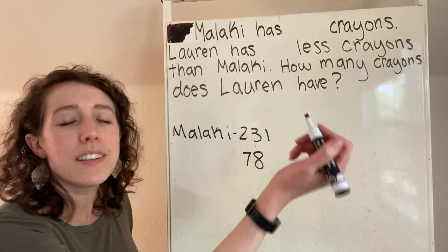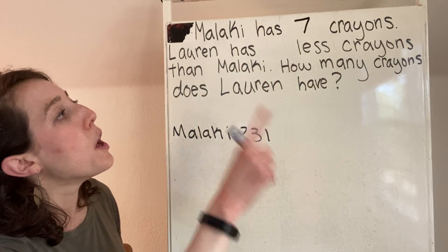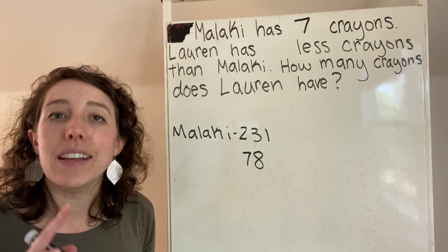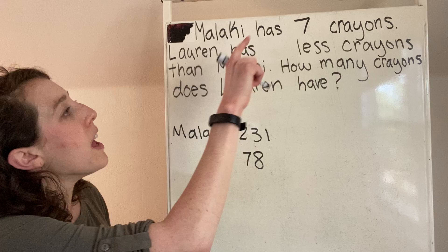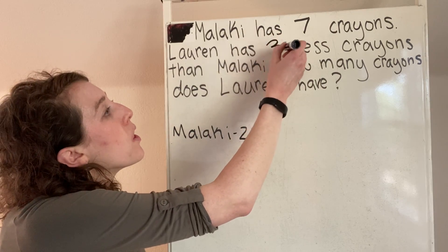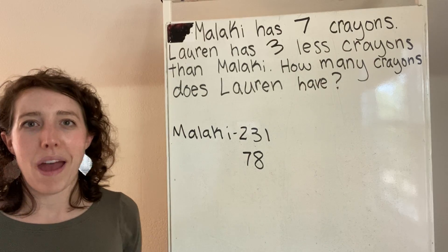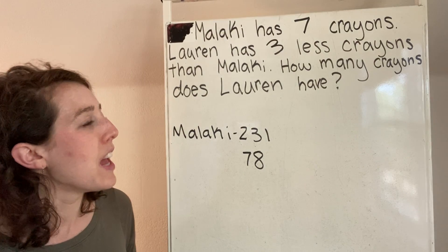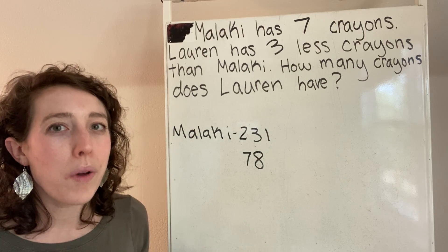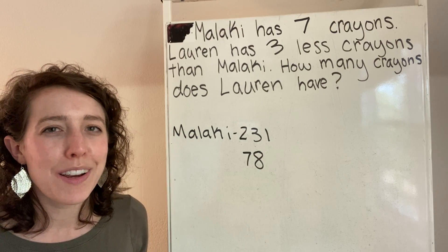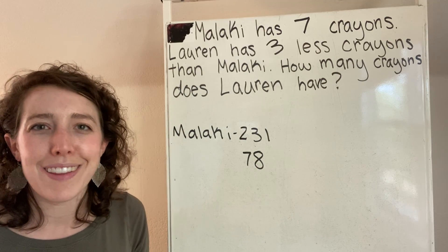I'll give Malachi seven — I gave you that number. Malachi has seven crayons. Lauren has three less crayons than Malachi. How many crayons does Lauren have? When I made those numbers smaller, was it easier for you to picture what was going on in this story?